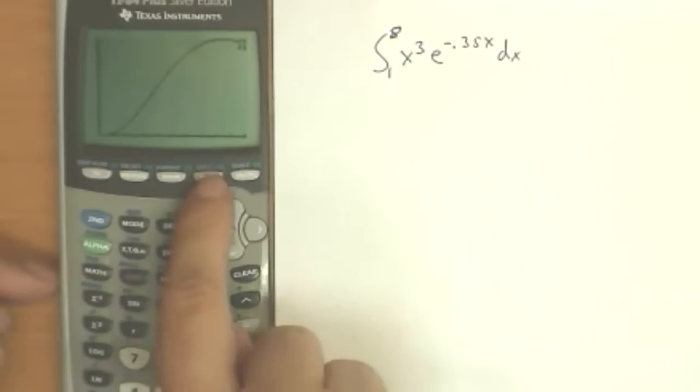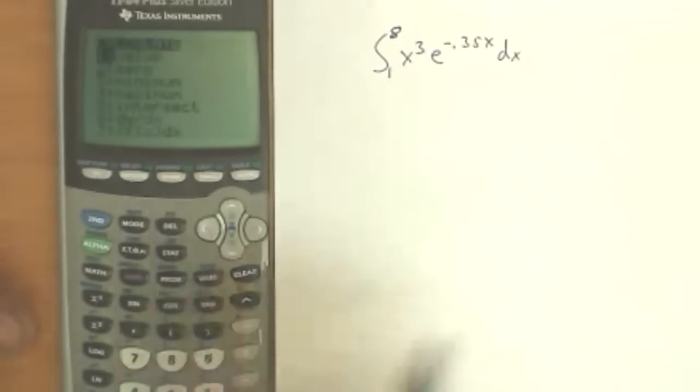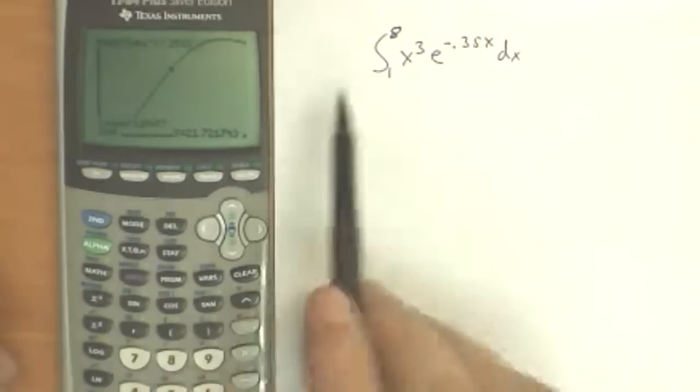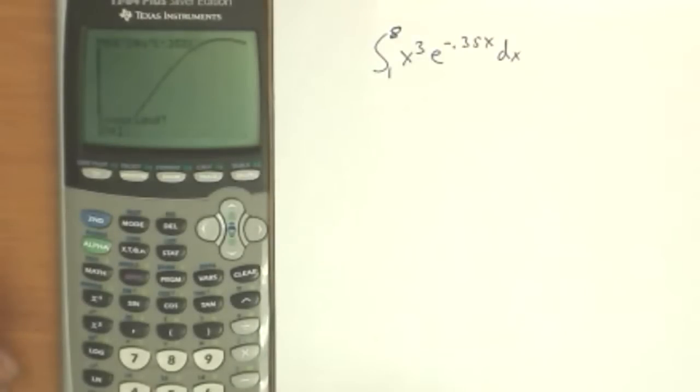So what I'm going to do is second calculate, which is above trace. And number 7 is integral of f of x dx. So we can select it. We can move down to it. It asks you for the lower limit, which of course is 1. And the upper limit, which of course is 8.